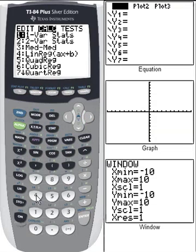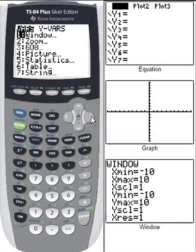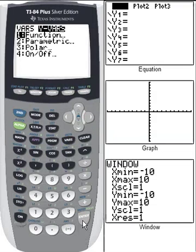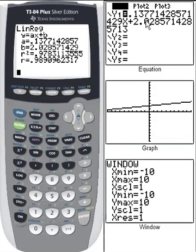So I go to stat calc, linear is number 4, and I'm going to have it put in as a graph for me. So vars, yvars, function, y1, and that's going to put the regression model into y1 for me. As you can see it came up in the y1 and it's already been graphed.